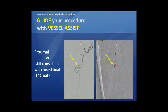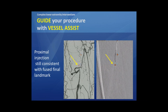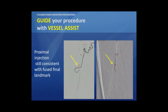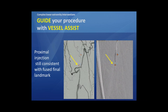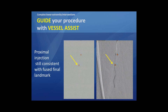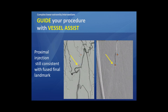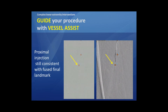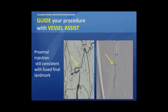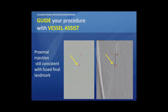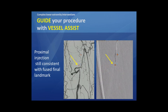Again, here you see how correct and precise the centerline tracking is. The final dot is just right at the point of reentry. This is also a way to reduce contrast injections — just to be sure when we are arriving at the entry point I don't need to inject contrast again and again through my sheath that is in place.